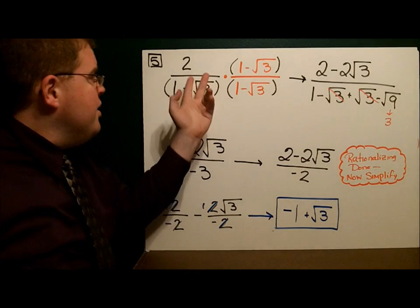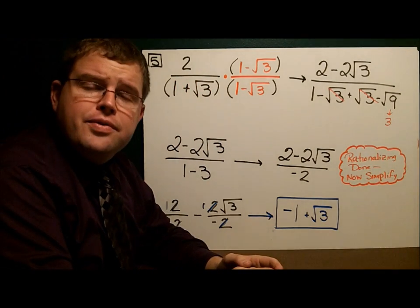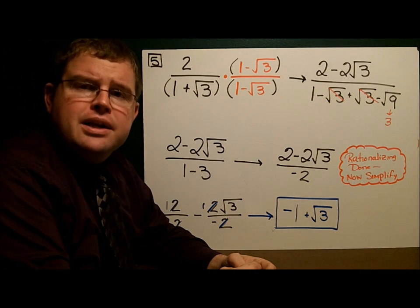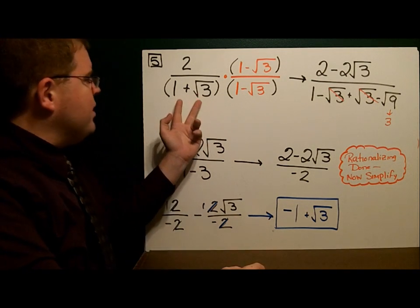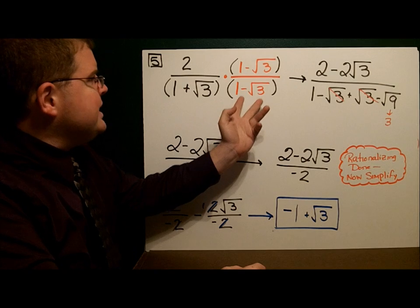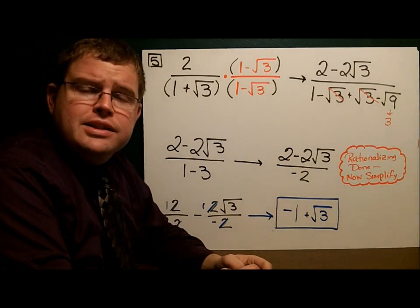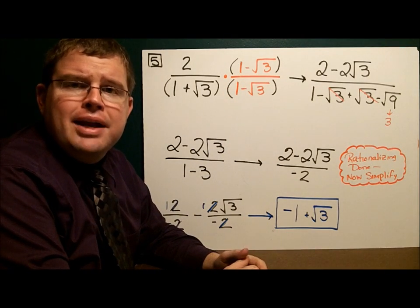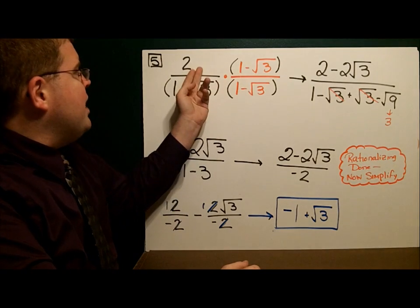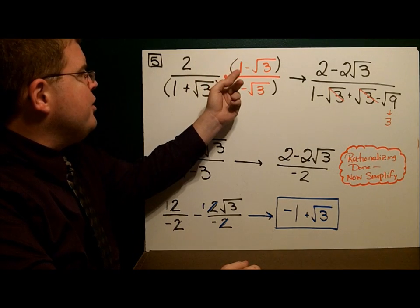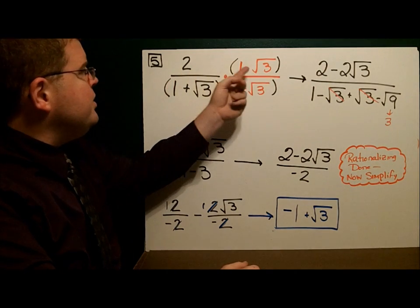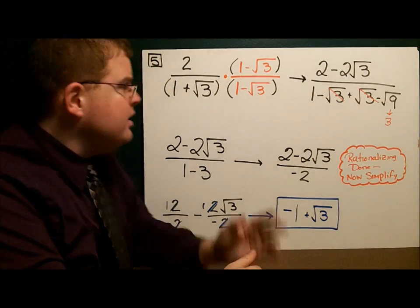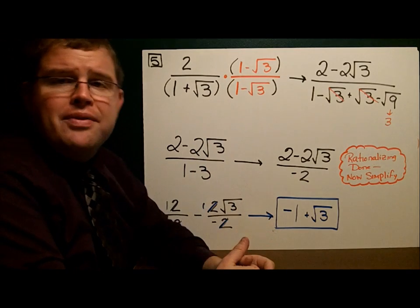Focus right up here. We have 2 over 1 plus the square root of 3. Because we have a binomial in the denominator, we have to use the conjugate. Since we have 1 plus the square root of 3, we're going to multiply by 1 minus the square root of 3 over 1 minus the square root of 3. This is our special 1, just like when we rationalized the denominator before.